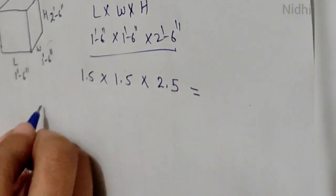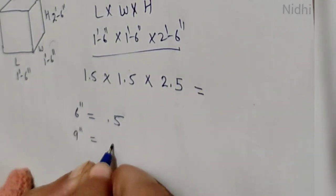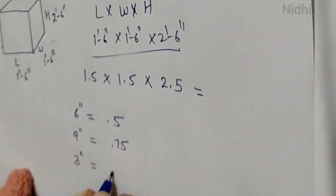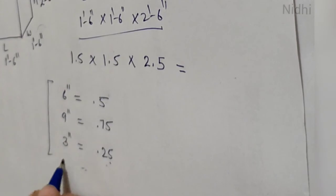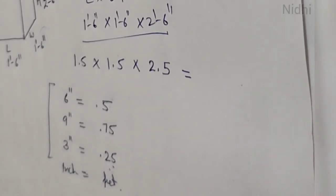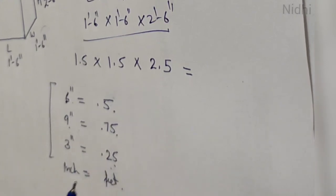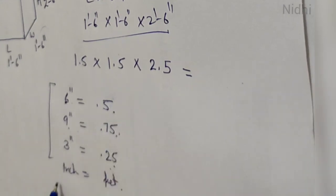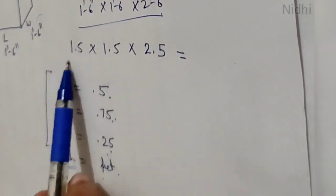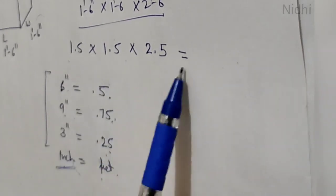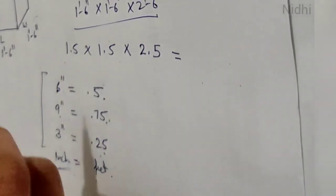For reference: 6 inches equals 0.5 feet, 9 inches equals 0.75 feet, and 3 inches equals 0.25 feet. So whenever you convert inches into feet, use these values. If you have 1.5 by 1.5 by 2.5, what is the answer? Please write it in the comment box.